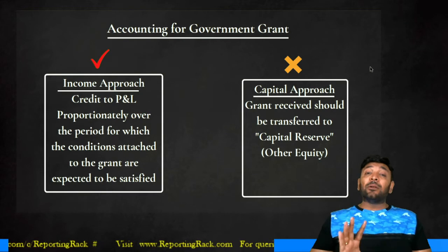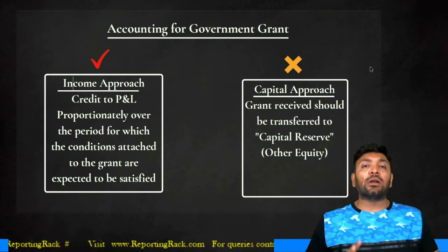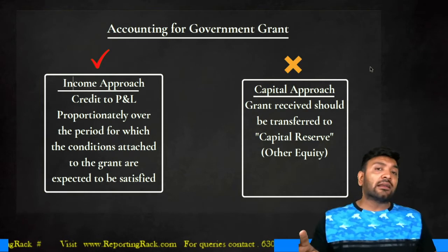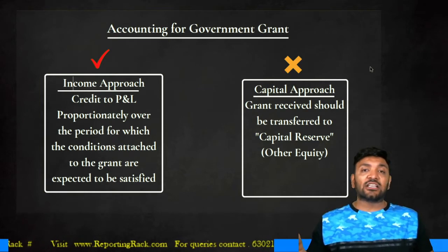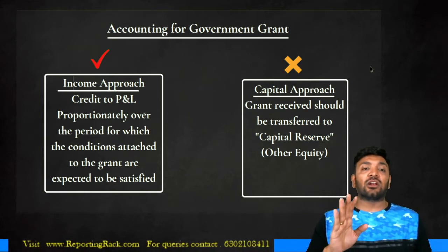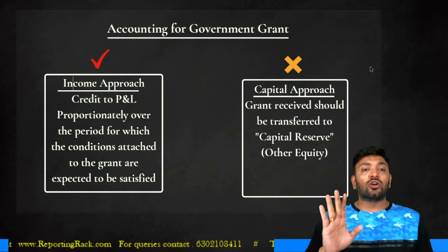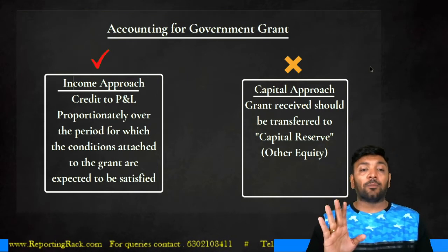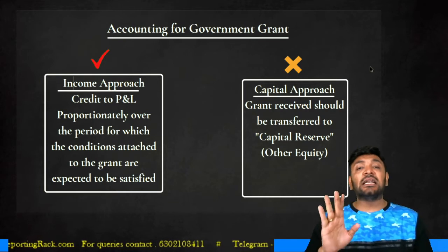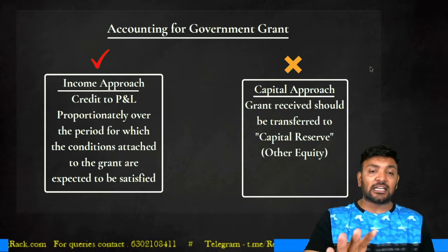The capital approach — where the grant is directly credited to capital reserve — is not recognized by Ind AS 20. Ind AS 20 completely revolves around the income approach: credit the P&L proportionately over the period for which the conditions attached to the grant are expected to be satisfied.